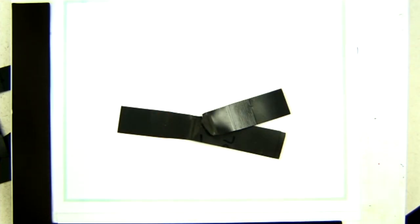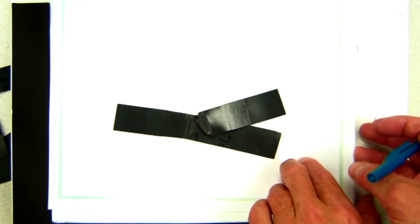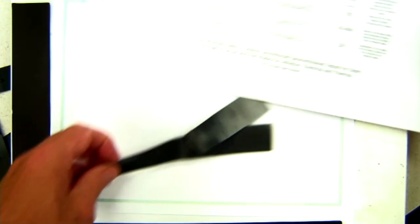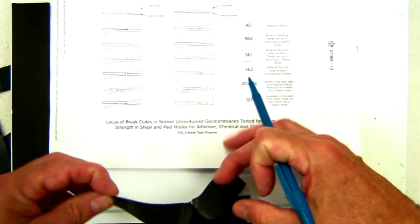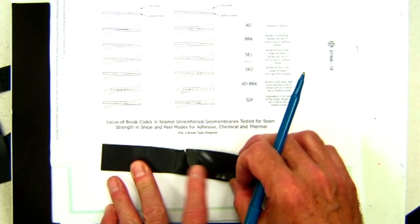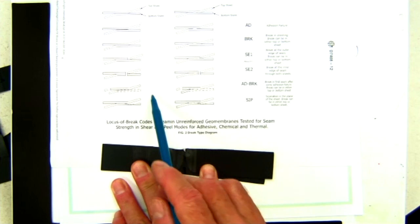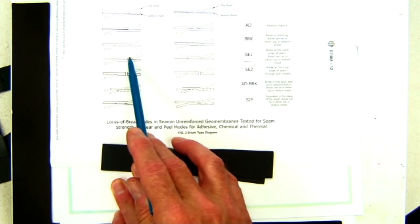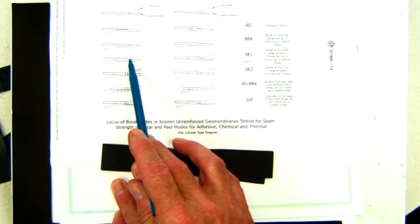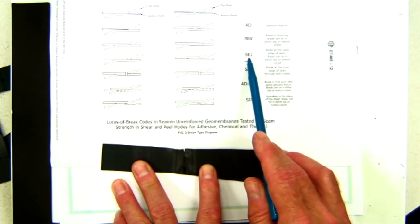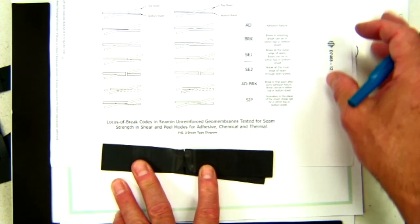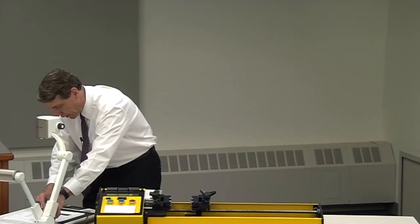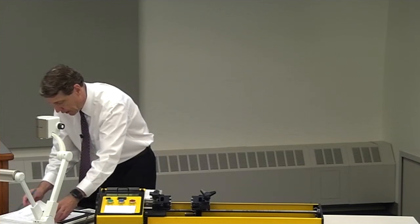Inside the test method D7608, there are codes for how the seam failed. This corresponds to a peel of the seam at the parent material. And so, it would get a break code of SE1. So, I will enter SE1 in the data sheet.